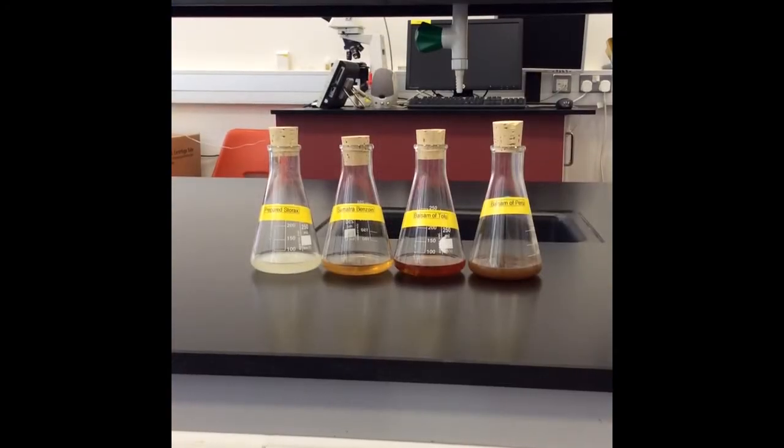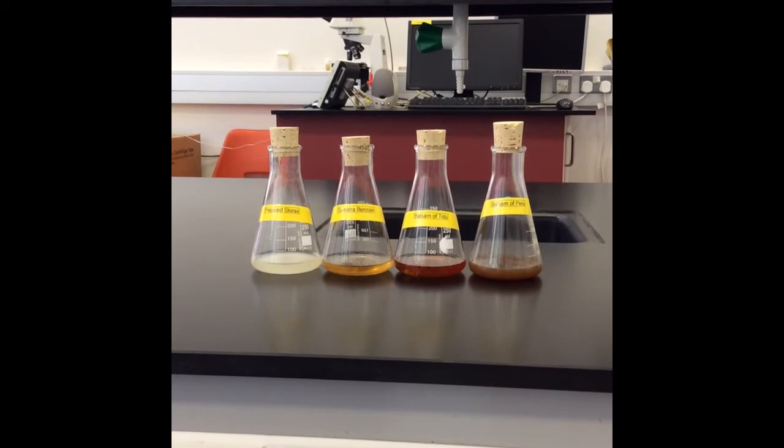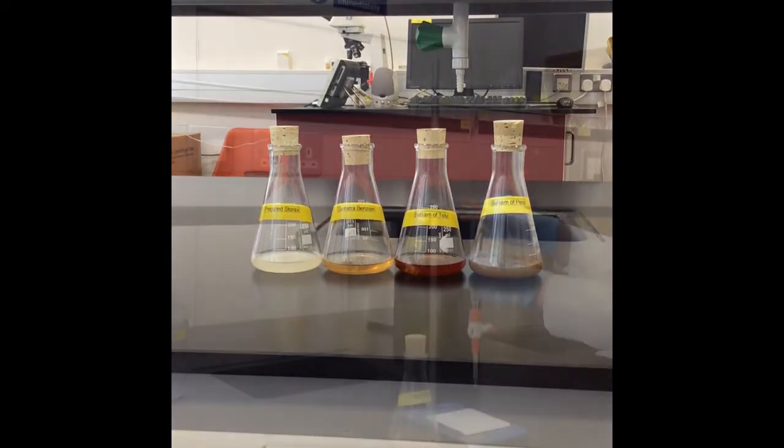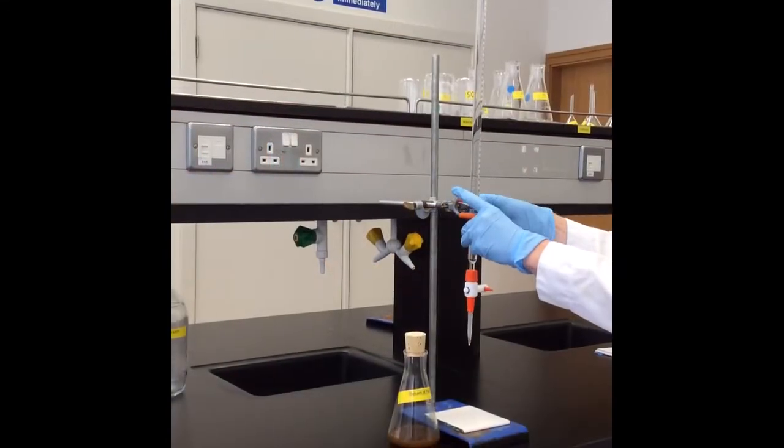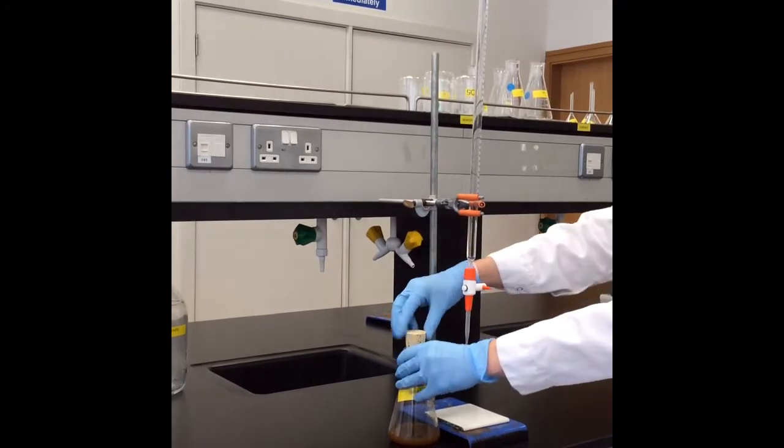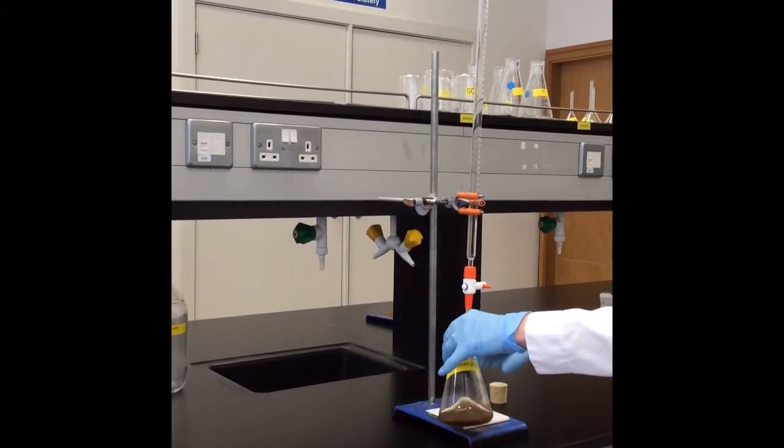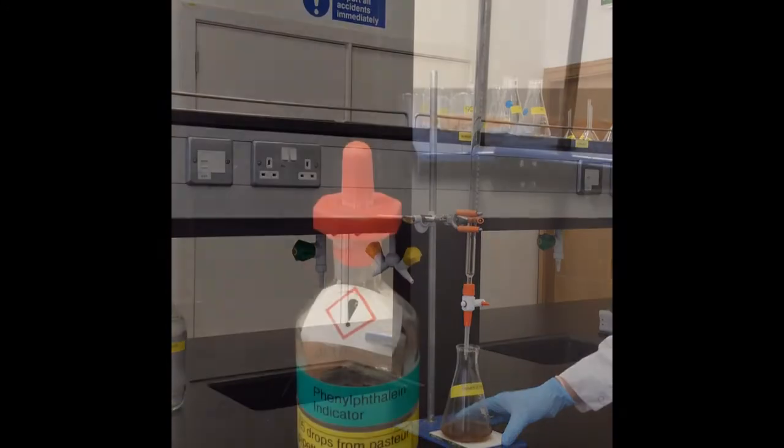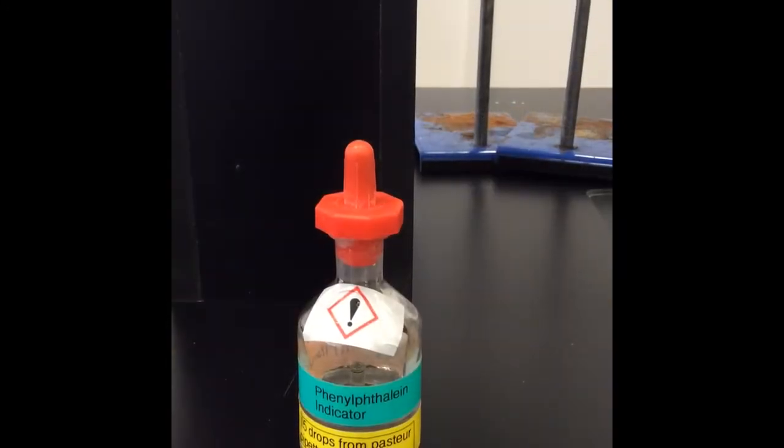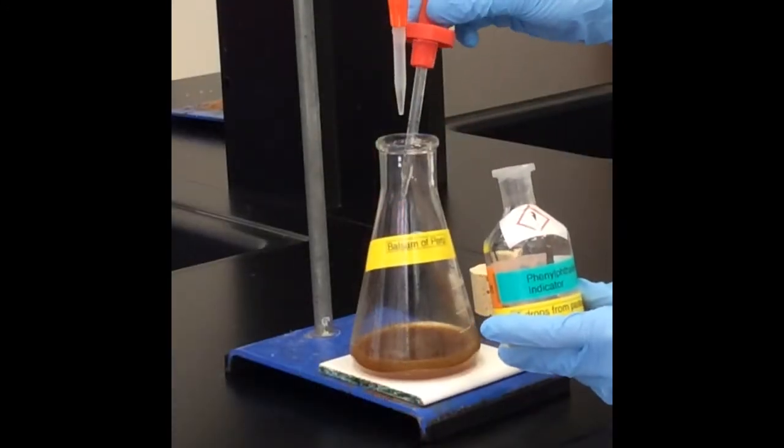One gram of each of the four balsams was dissolved in 50ml of methanol. Each of the four balsams were titrated against NaOH three times and the mean was calculated. A few drops of phenolphthalein was added as the base indicator.